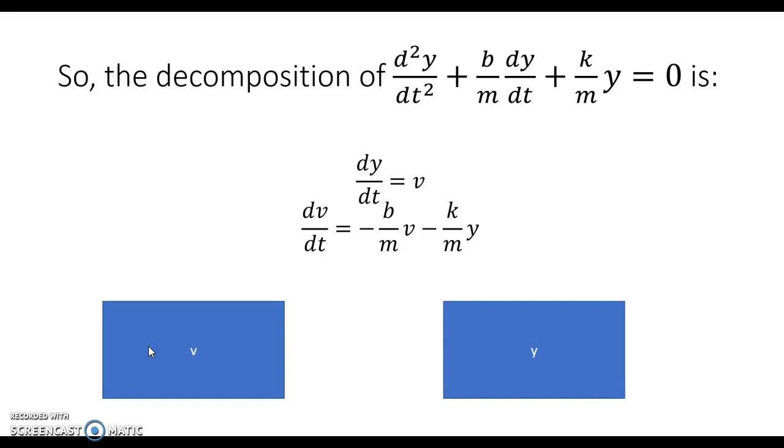And now we'll put it all together. So the decomposition of the spring mass system, second derivative of y plus b over m times the first derivative of y plus k over m times y equals zero, is dy/dt is v. Remember that was our substitution. That's still a differential equation. And then our second one after doing our substitution is dv/dt equals negative b over m times v minus k over m times y.